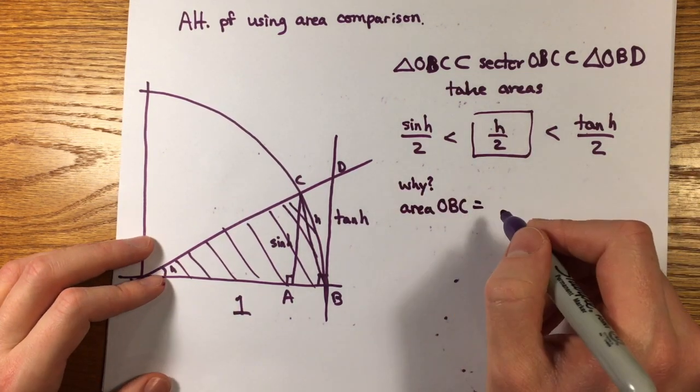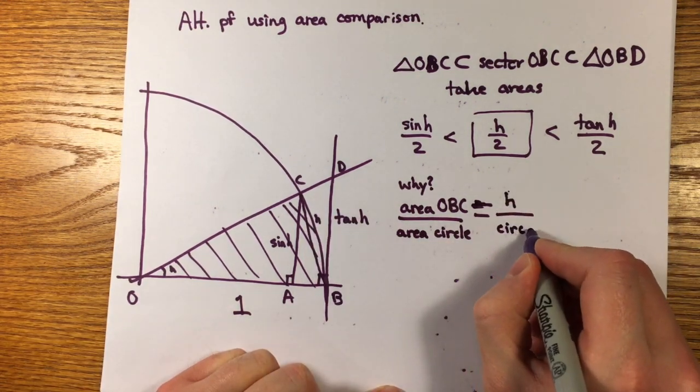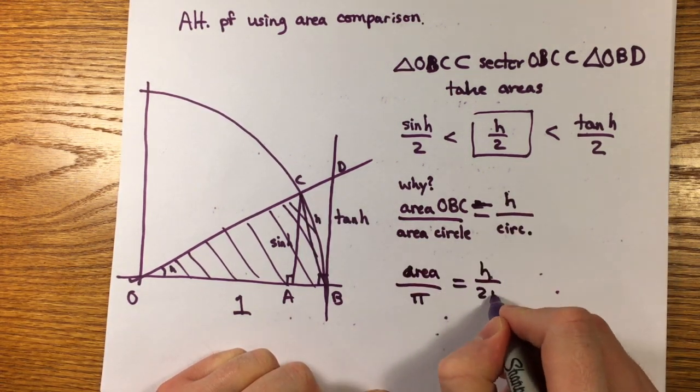This is because it's in proportion to the area of the circle as the arc is to the circumference, and the circumference is two pi, while the area of the unit circle is pi.